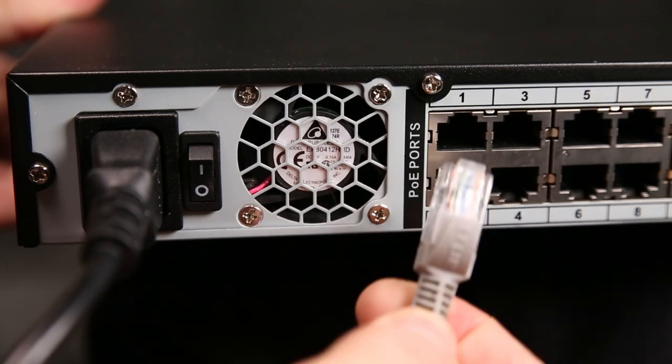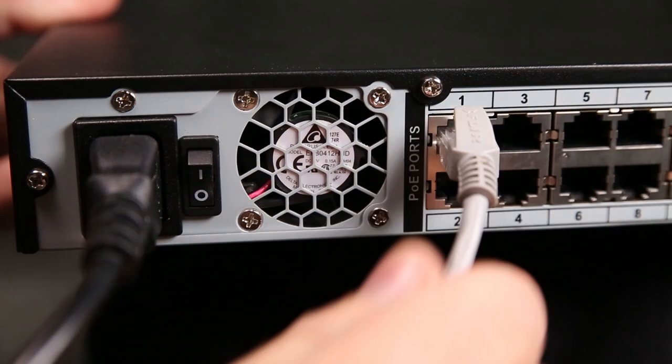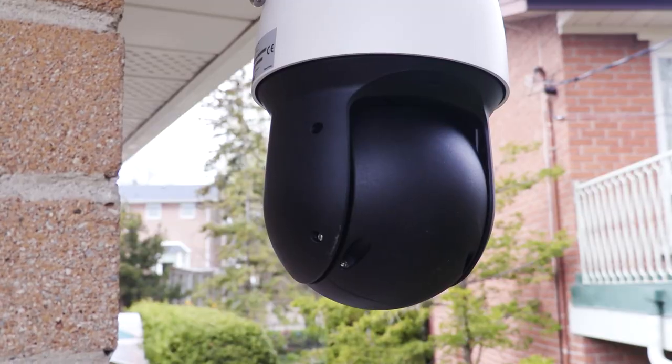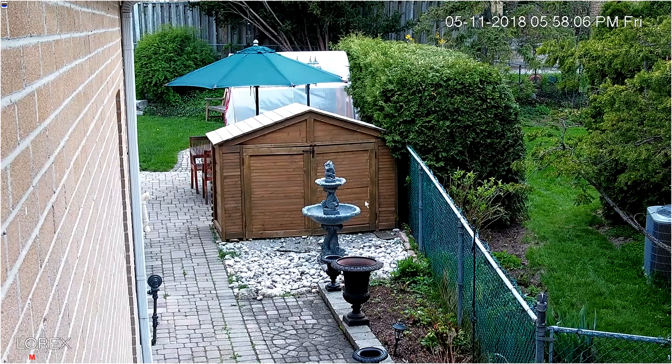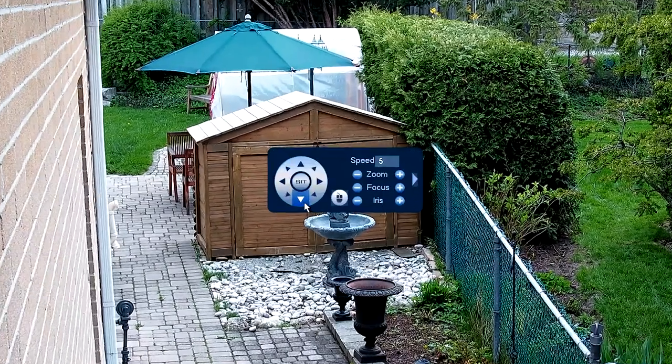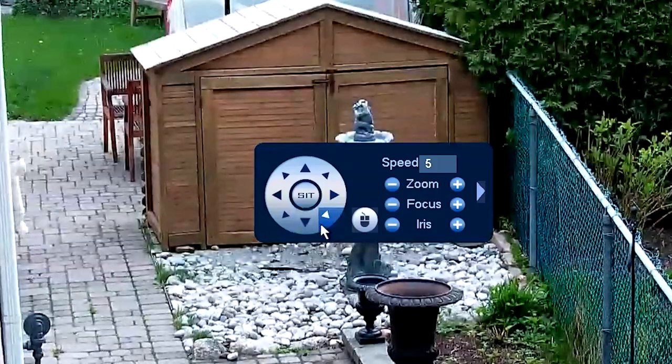Now connect the other end of the Ethernet cable to the NVR. The camera will power up. Now you can adjust the position of the camera using the NVR software. Navigate to the PTZ function on the menu and adjust framing using the left, right, and up and down arrows.